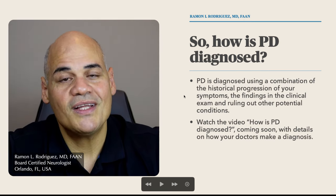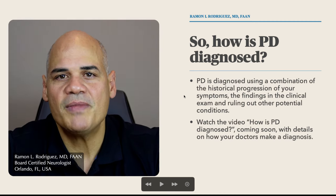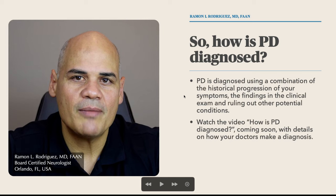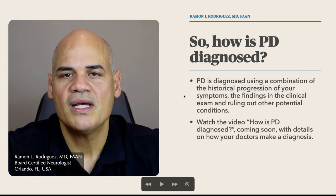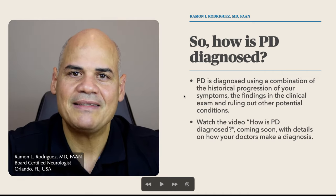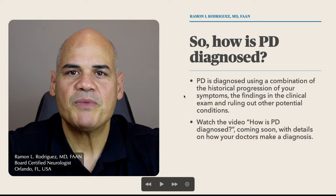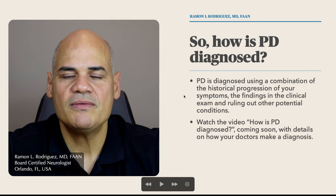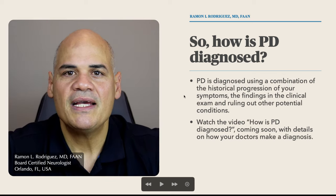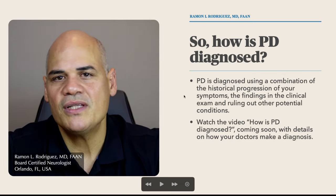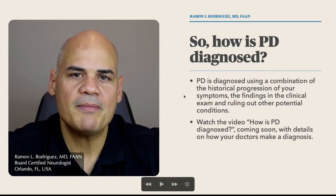So how is Parkinson's disease diagnosed? Parkinson's disease is diagnosed using a combination of the historical progression of your symptoms. Your doctor will ask you multiple questions to assess if you have the classic symptoms showing Parkinson's progression, then do a physical examination looking for tremors, stiffness, and slowness. Then he will rule out other potential conditions, which might include blood work, MRIs, or EEGs — there may be multiple tests.